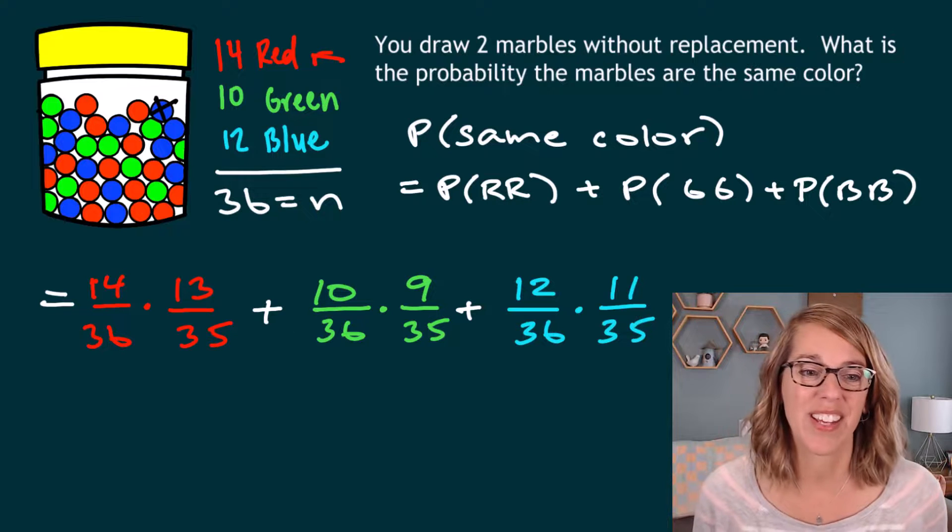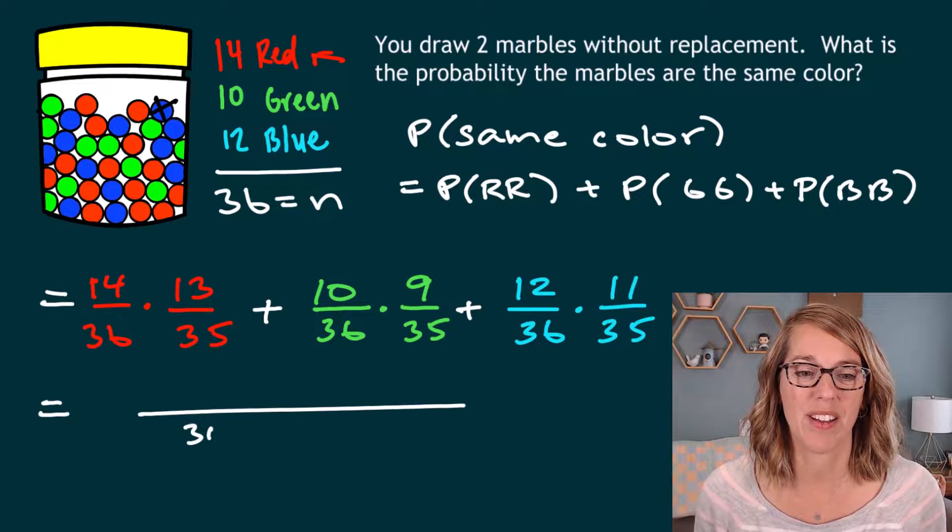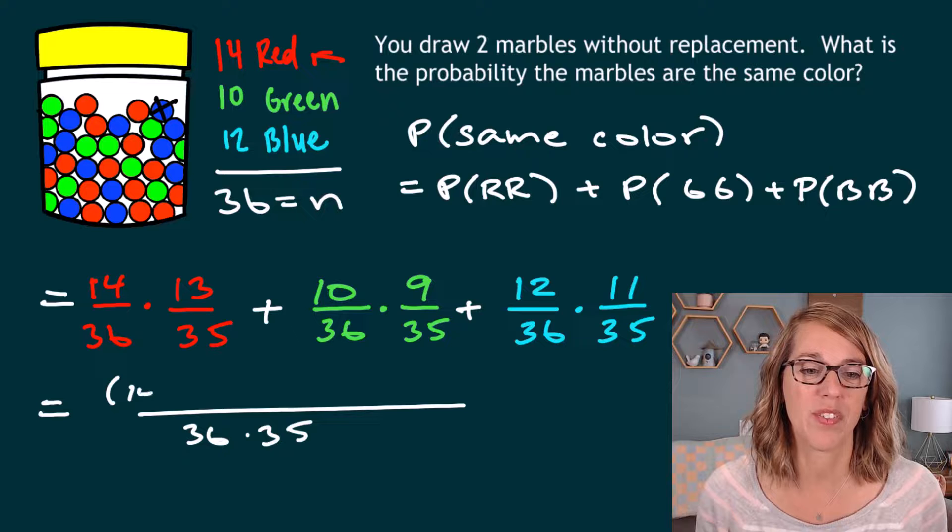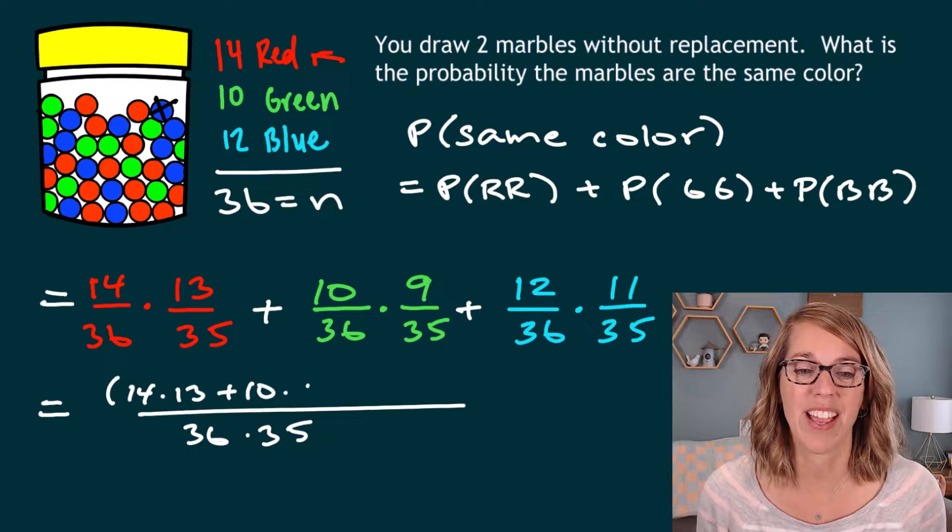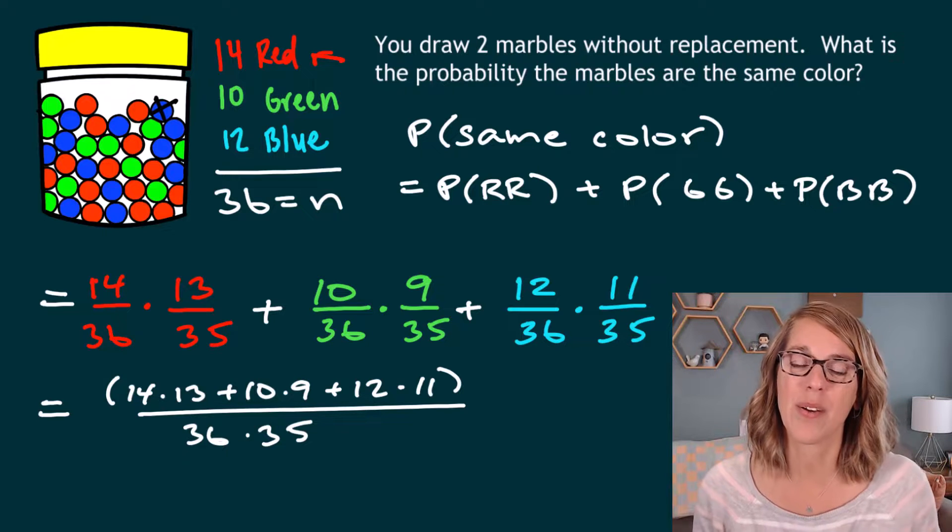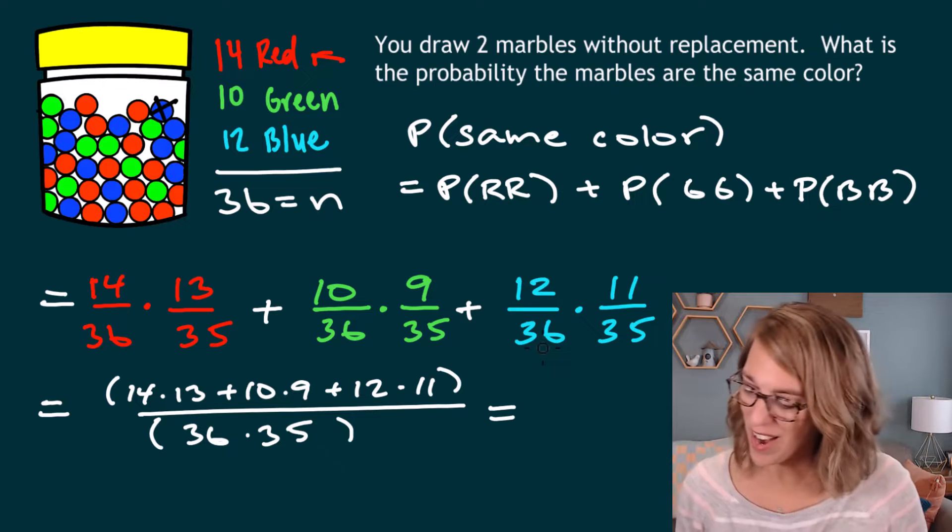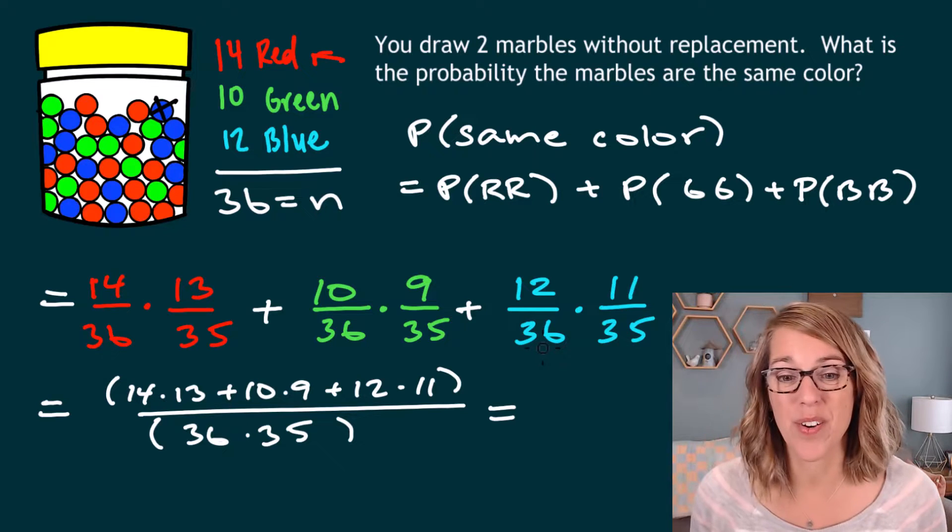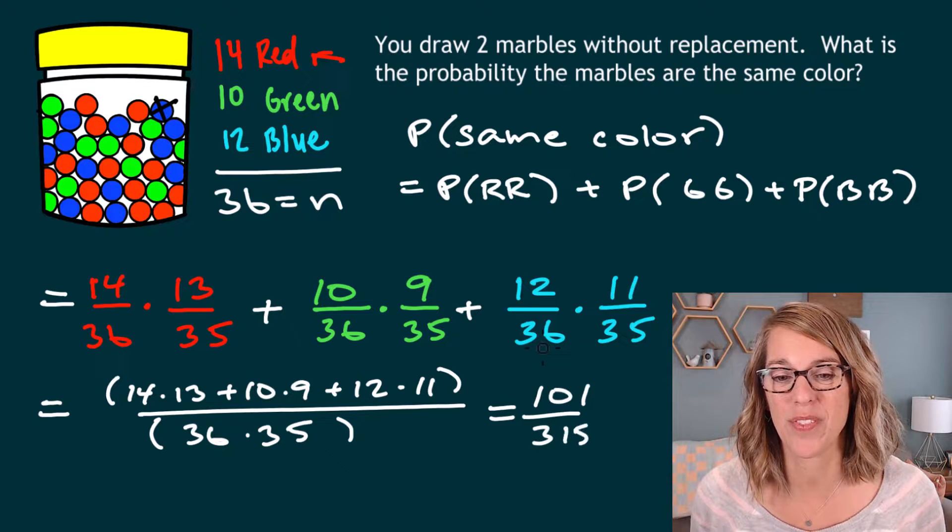To make this one a little bit easier to calculate in my calculator, I noticed that I've got this common denominator of 36 times 35, which leaves me with those numerators. So 14 times 13 plus 10 times nine plus 12 times 11. I can go ahead and put this into my calculator. As a reduced fraction, you get 101 over 315. So 101 over 315.